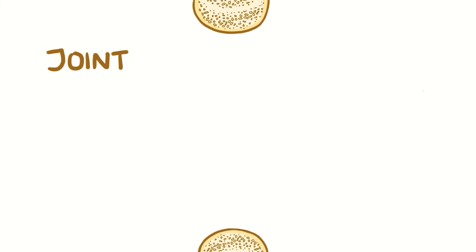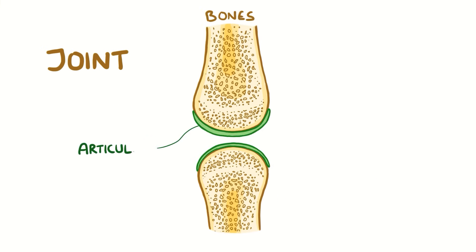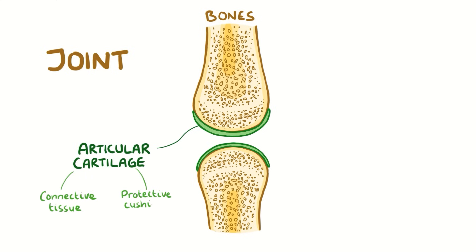A healthy joint typically has two bones covered with articular cartilage at the ends. Articular cartilage is a type of connective tissue that acts like a protective cushion — a lubricated surface for bones to smoothly glide against. One type of joint, like the knee joint, is called a synovial joint.